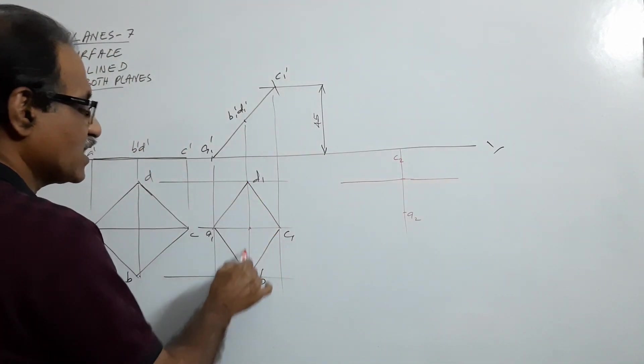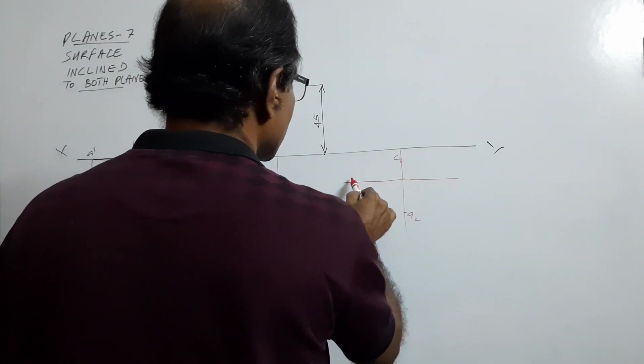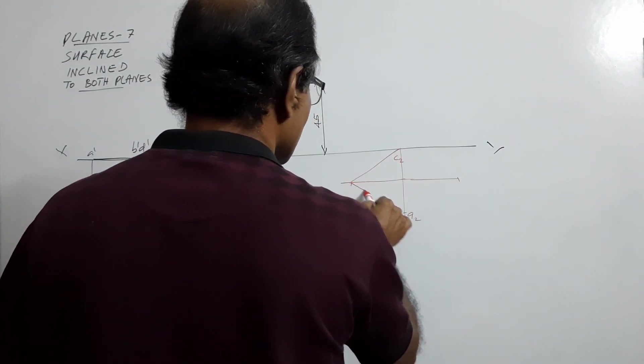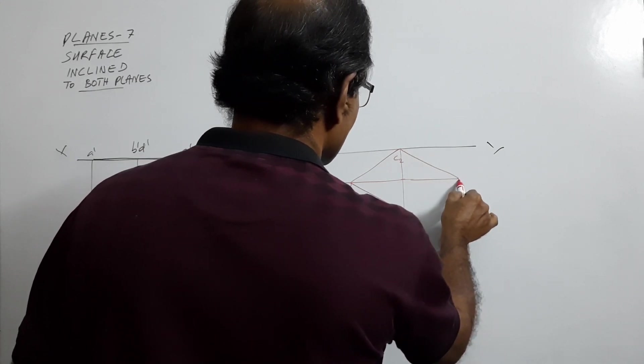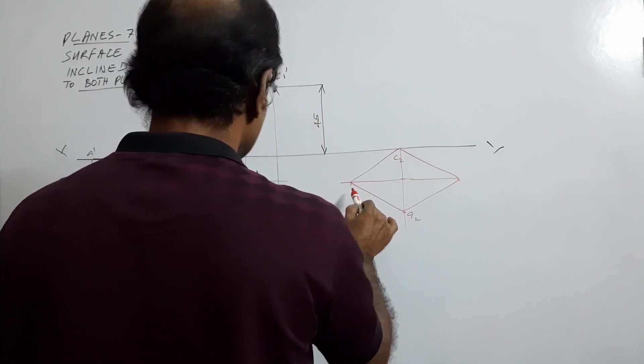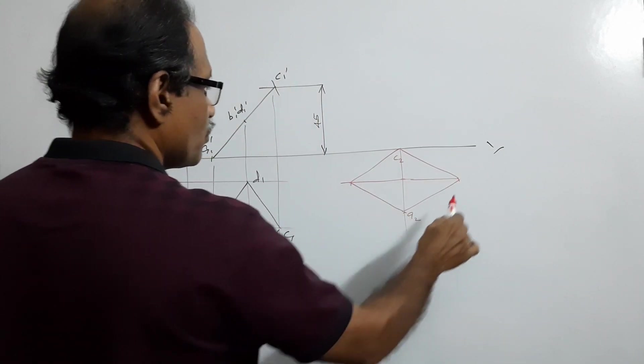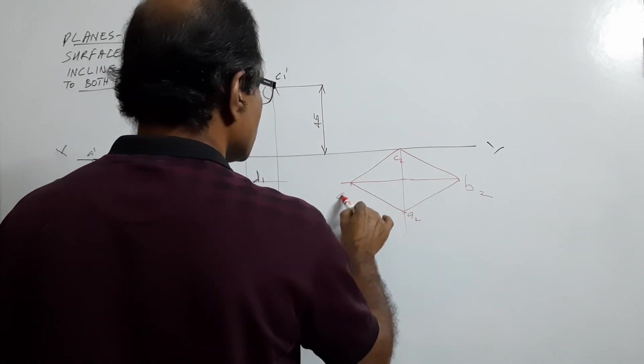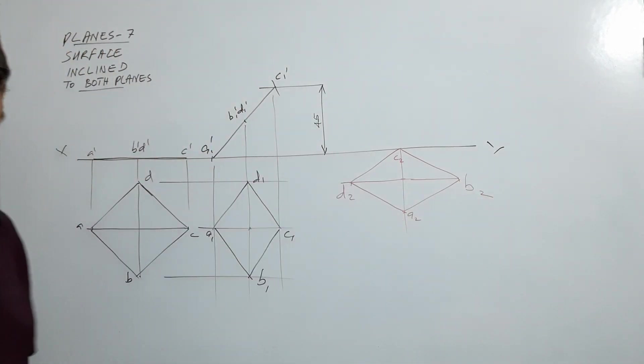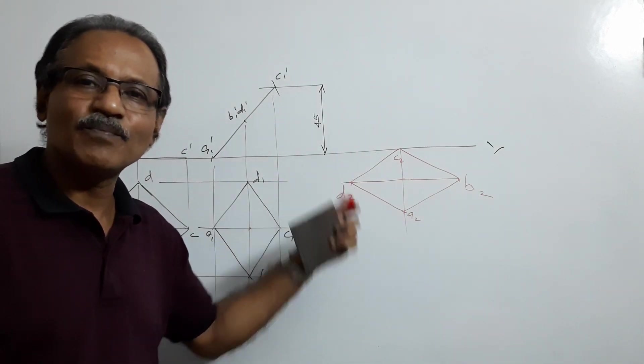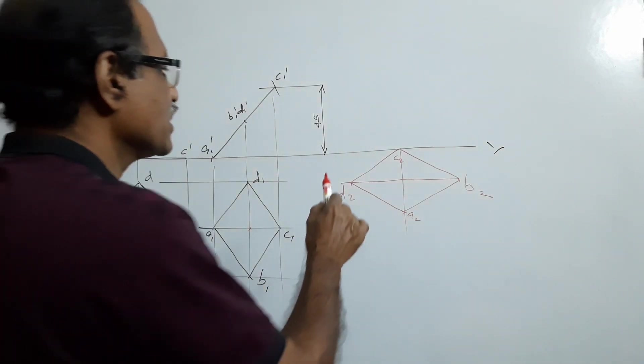Draw a horizontal line, measure 35, 35, 70 and mark to either sides, connect. This is B2 and this is D2. What is this? This is the final plan. Draw vertical projectors up.